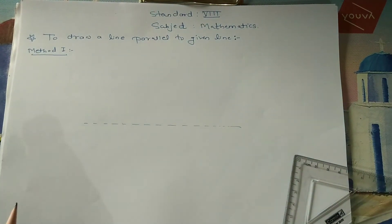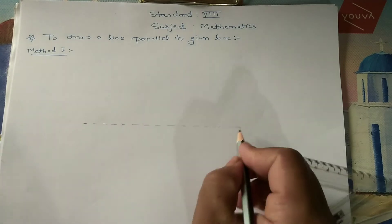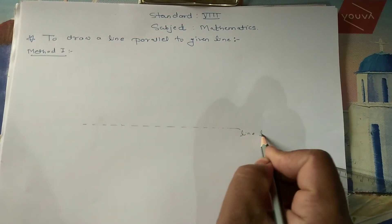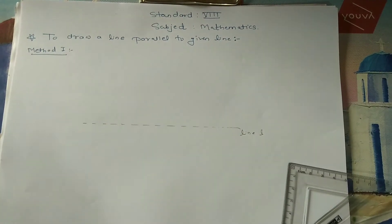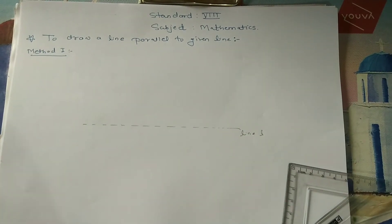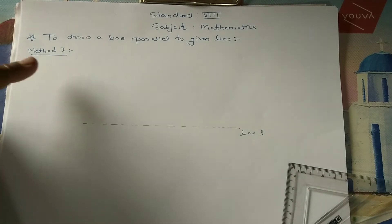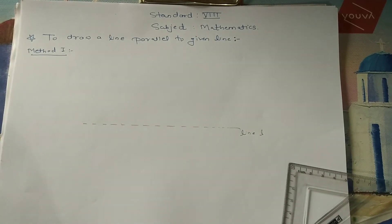Suppose this is the given line, line L. To this line, we have to draw a parallel line. So, the first method is with the help of set squares.